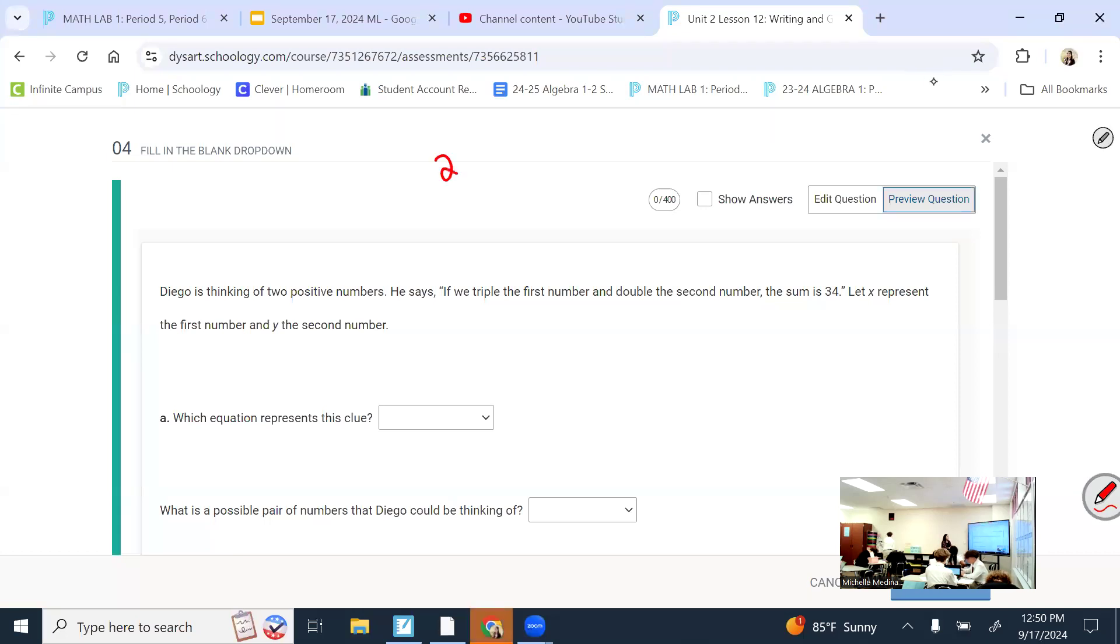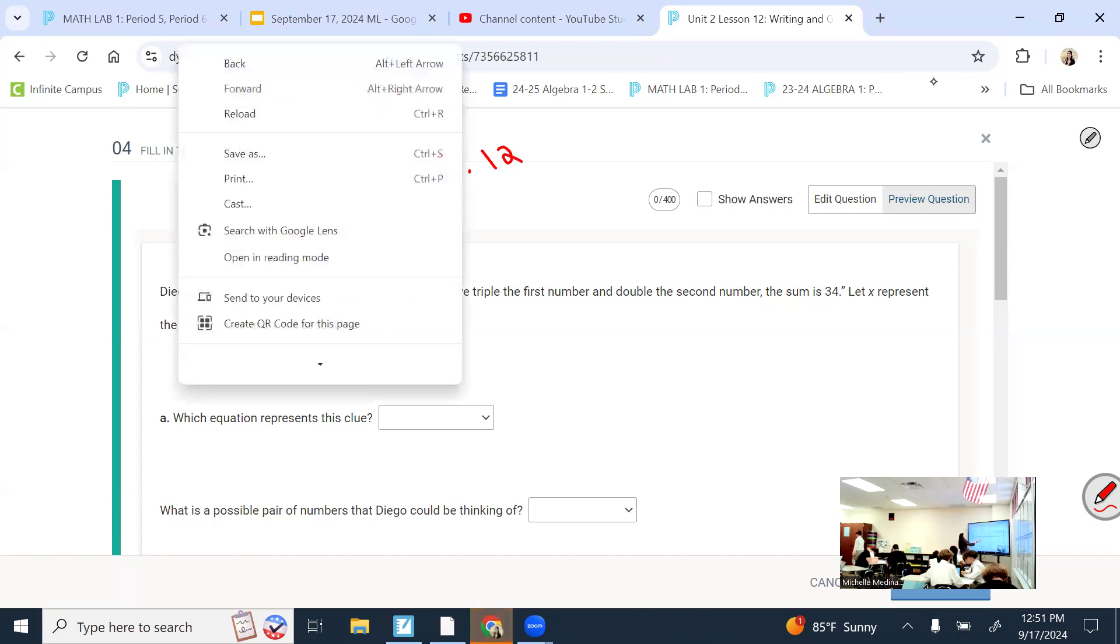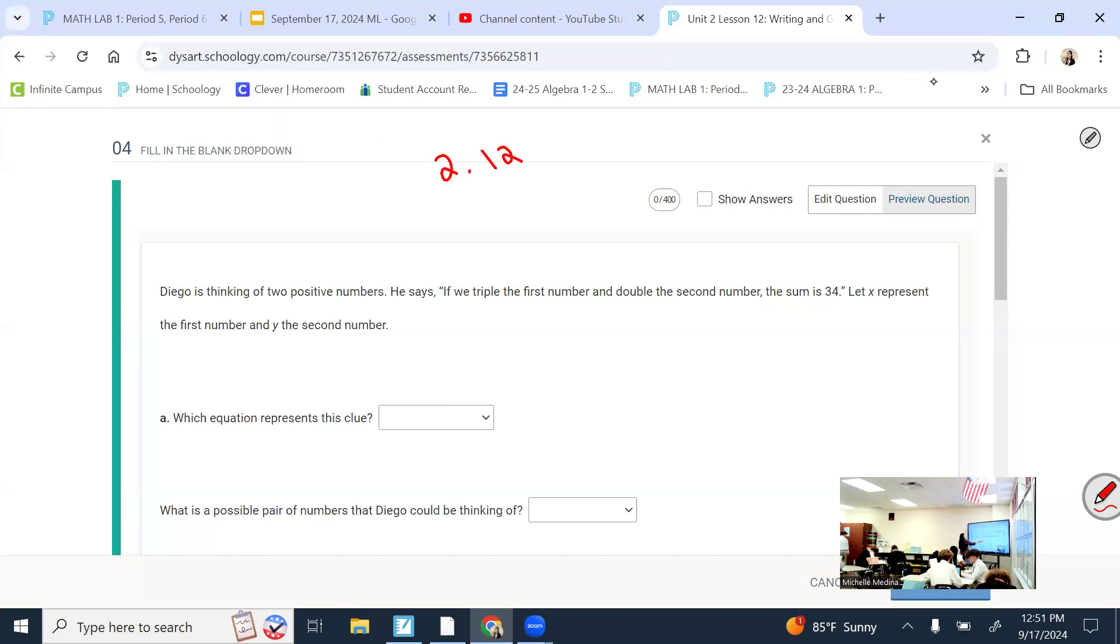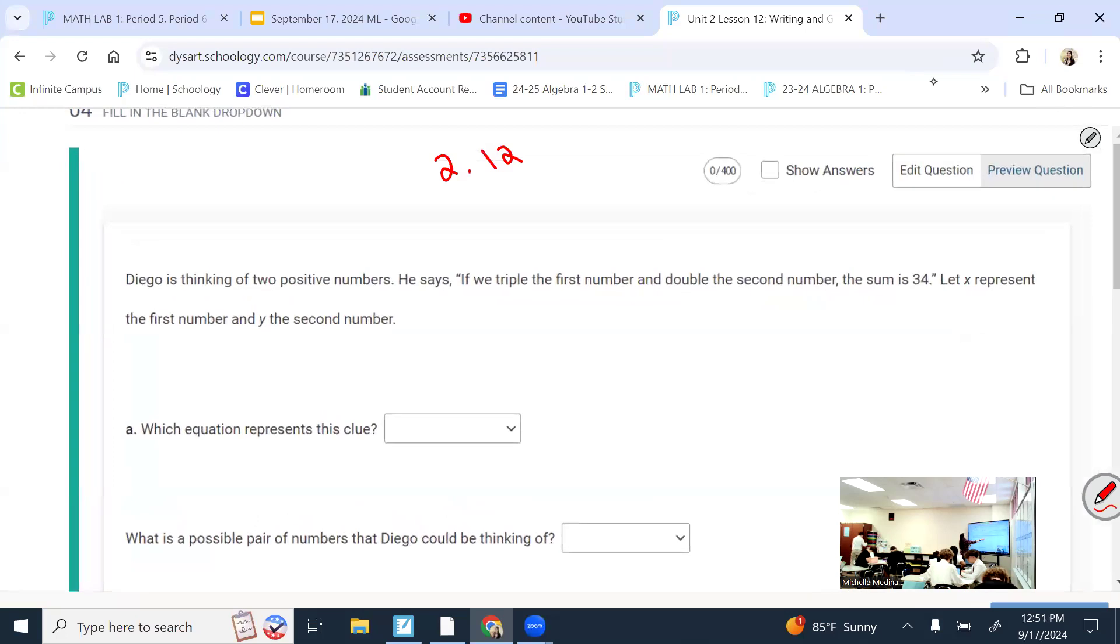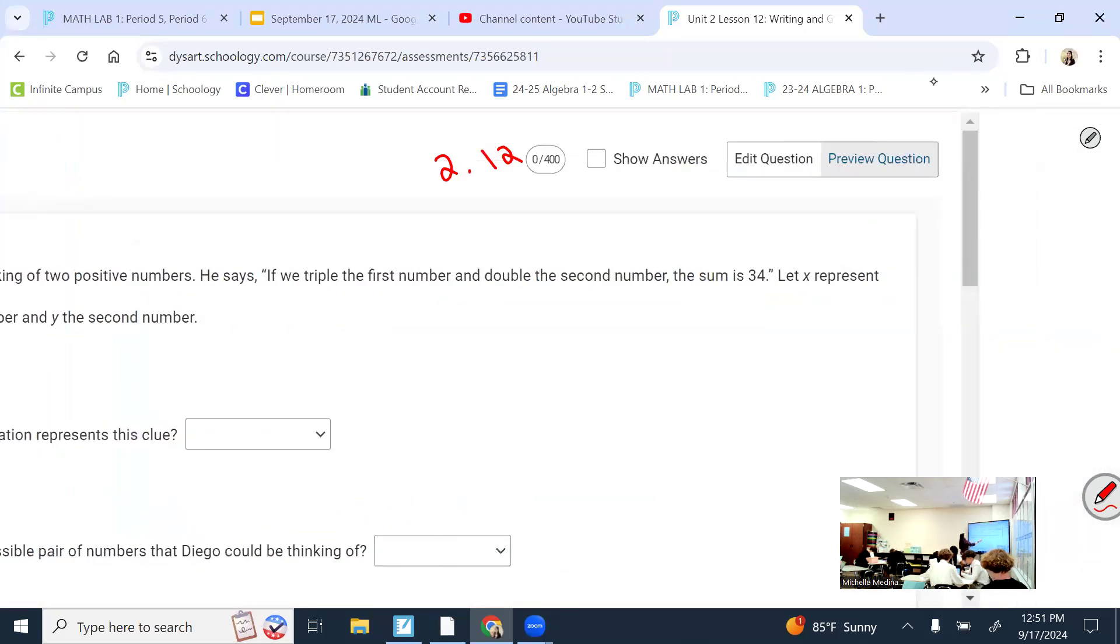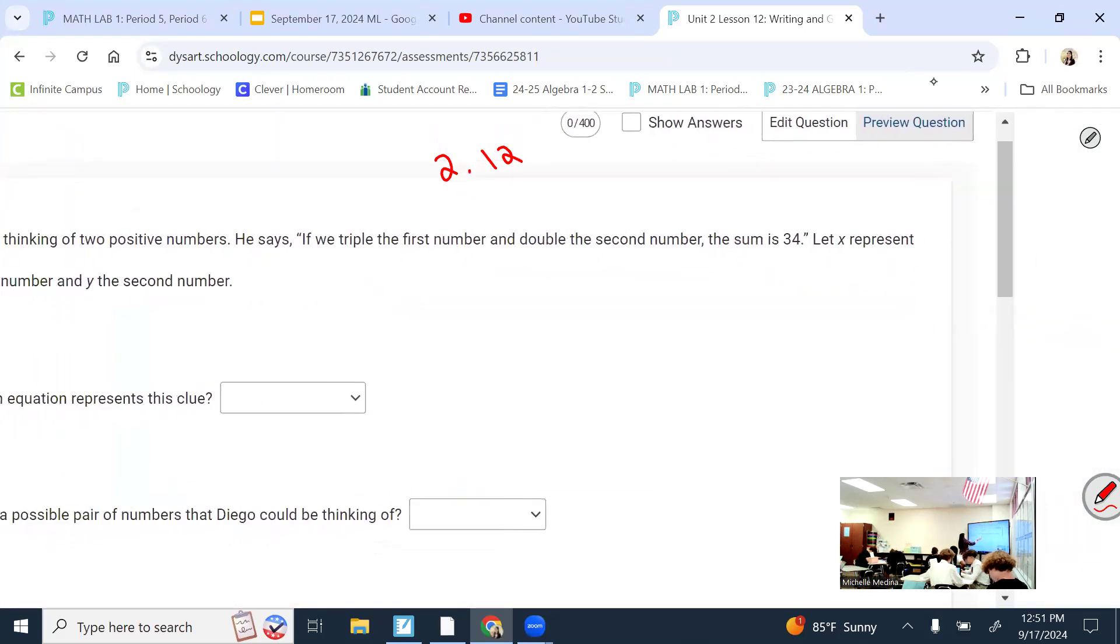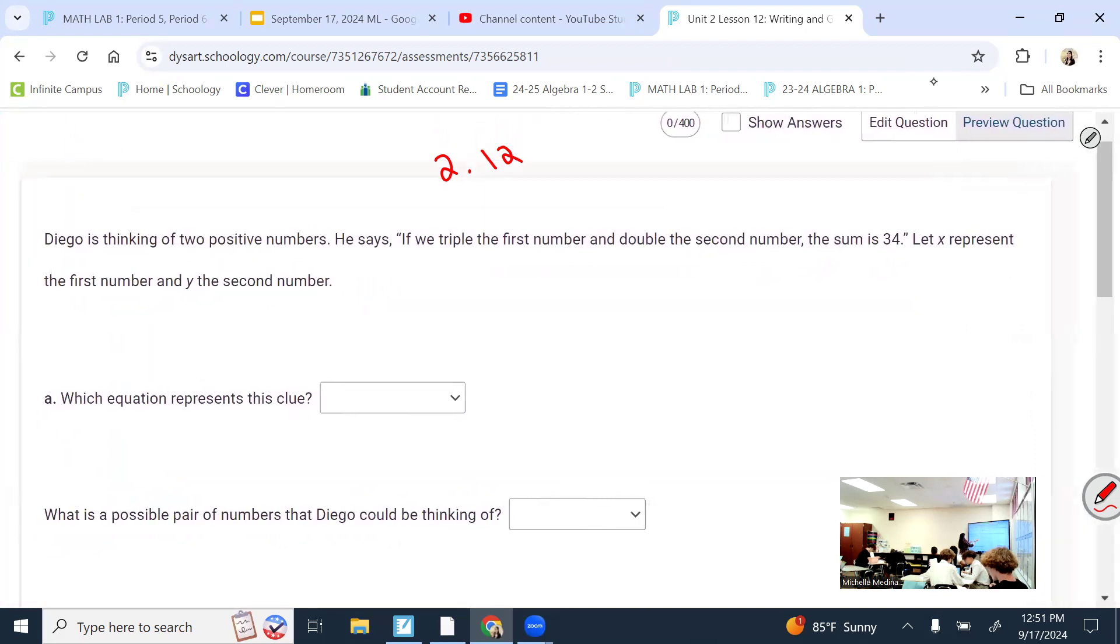Lesson 12, number four, if you want to follow along. Diego is thinking of two positive numbers. He says, if we triple the first number and double the second, the sum is 34. Let X be the first number and Y be the second, which equation represents it. So this is really good practice for word problems, translating expressions. And we will do this again in Lesson 17.